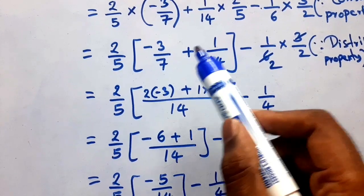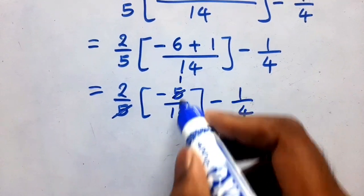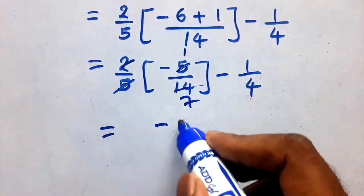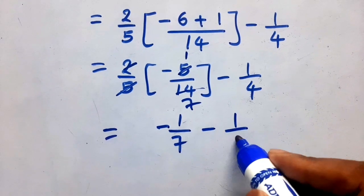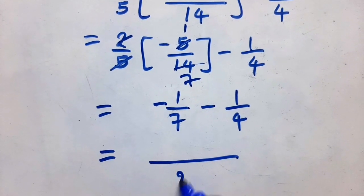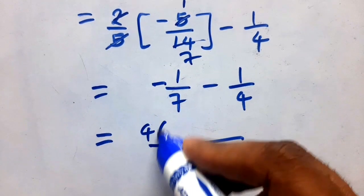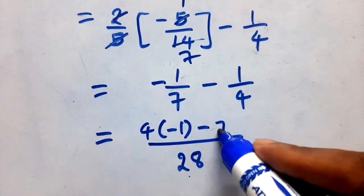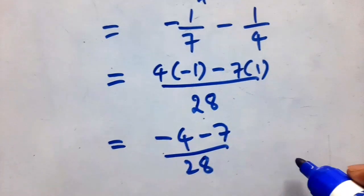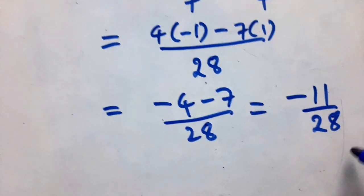Here also the distributive property applies: a into b plus c gives ab plus ac. See: 5 divides 5 one time, 2 divides 14 seven times. So the remaining value is minus 1 by 7, minus 1 by 4. LCM of 7 and 4 is 28. Seven divides 28 four times: 4 into minus 1 gives minus 4. Four divides 28 seven times: 7 into 1 gives 7. So minus 4 minus 7 by 28 equals minus 11 by 28. This is the final answer.